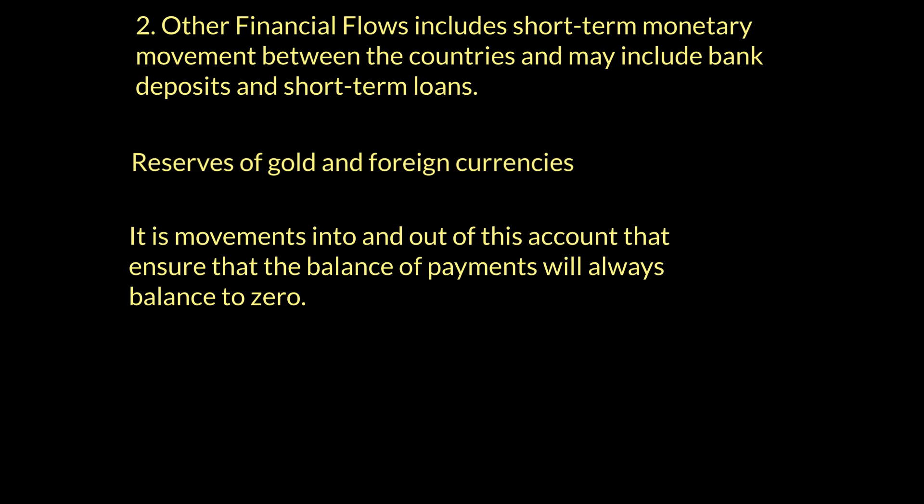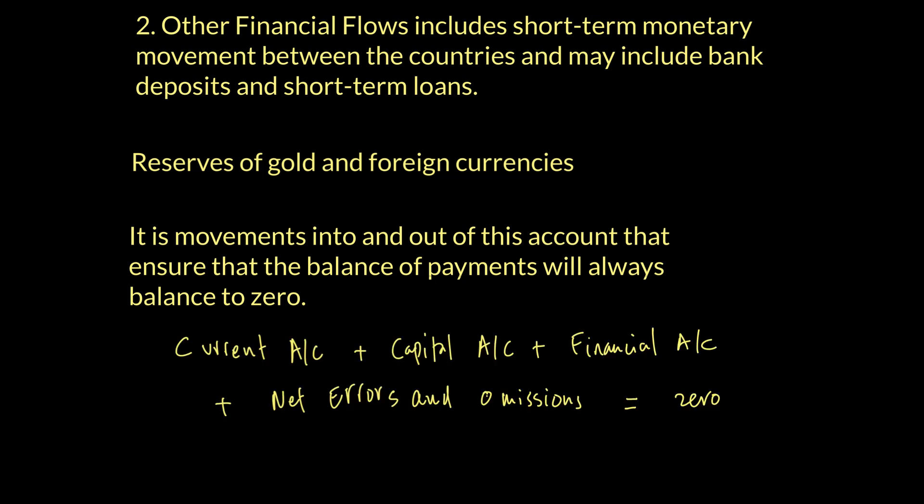Sometimes the accounts don't perfectly balance to zero due to mistakes — delayed payments or transactions not properly accounted for. According to international standards set by the IMF, the current account plus capital account plus financial account plus net errors and omissions should balance to zero. Any unaccounted transactions are placed in net errors and omissions, and these are corrected over time to bring the balance of payment to zero.